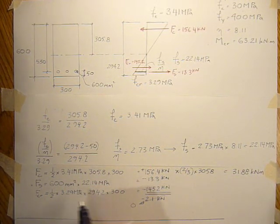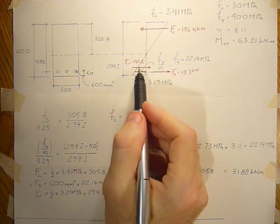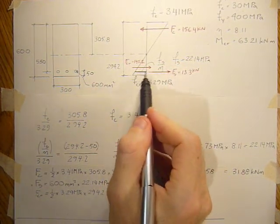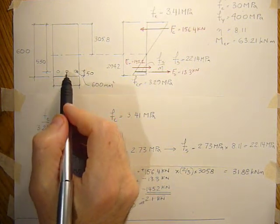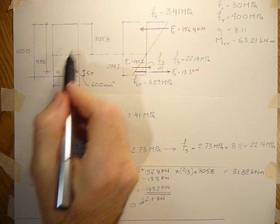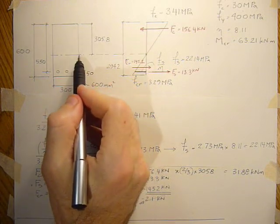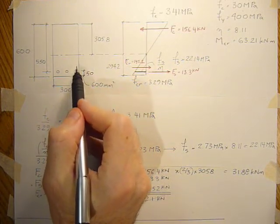And the next force. And the next force was the steel, 13.3. And we could find its distance to the neutral axis by taking the 550 minus 305.8 to give us this distance here.